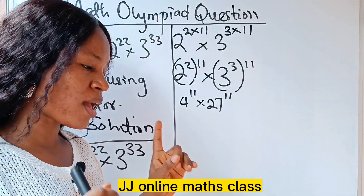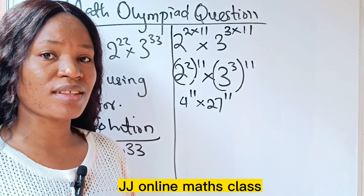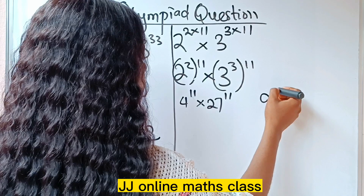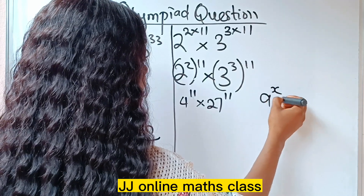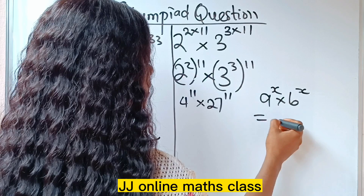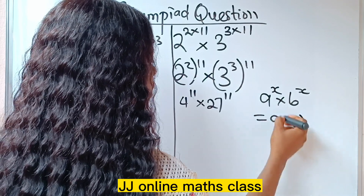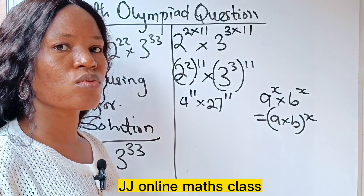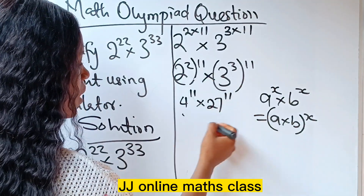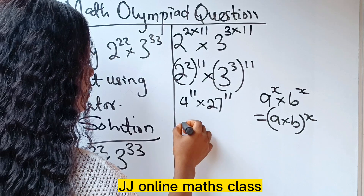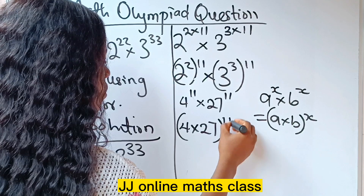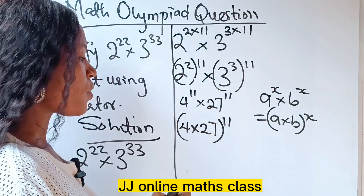Now remember another law of indices which states that a to the power of x times b to the power of x equals a times b, all to the power of x. So we can write this as 4 times 27, to the power of 11.